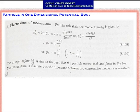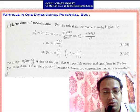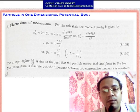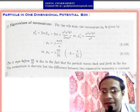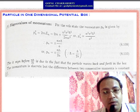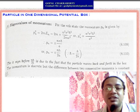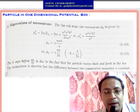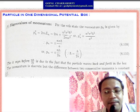For the nth state of the particle in a one-dimensional potential box, the momentum is found from p² = 2mE_n. Substituting the energy eigenvalue: p² = 2m · n²π²ℏ²/(2ma²) = n²π²ℏ²/a². Therefore, p = ±nπℏ/a = ±nh/(2a). The ± sign is due to the fact that the particle moves back and forth within the box.